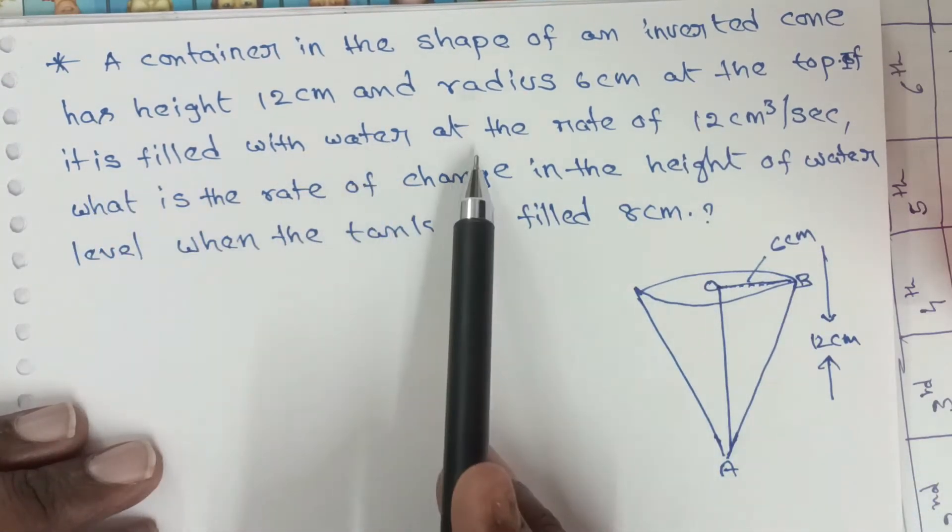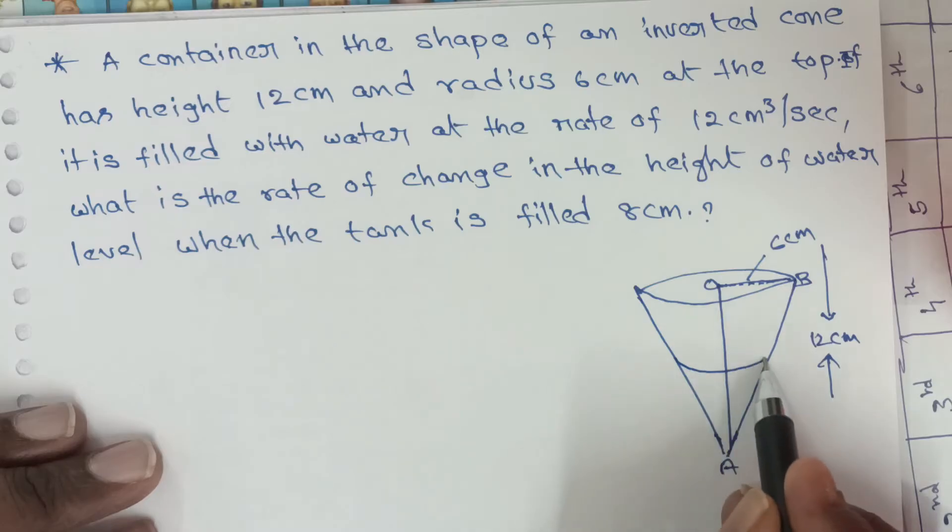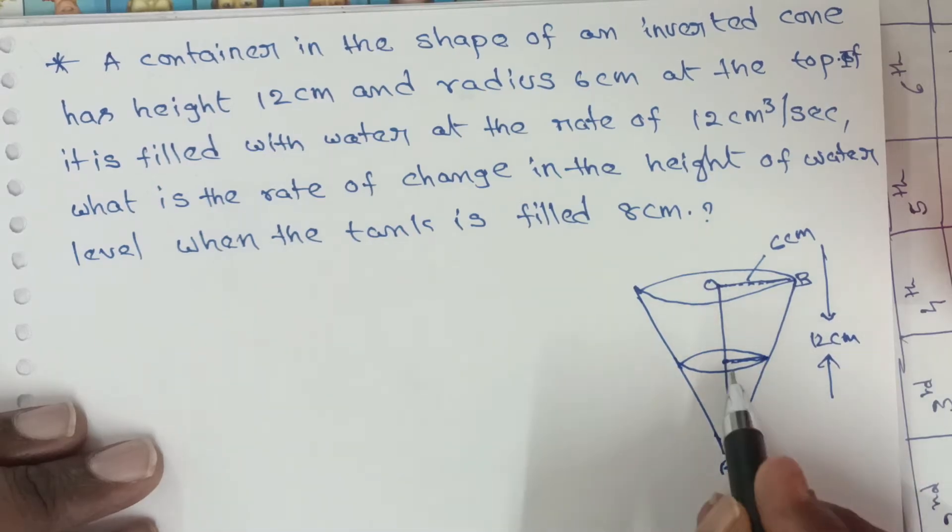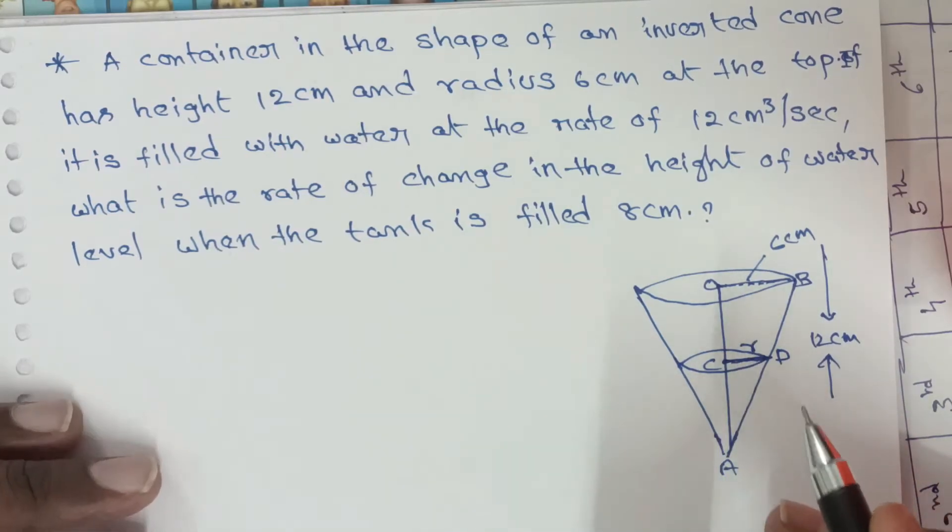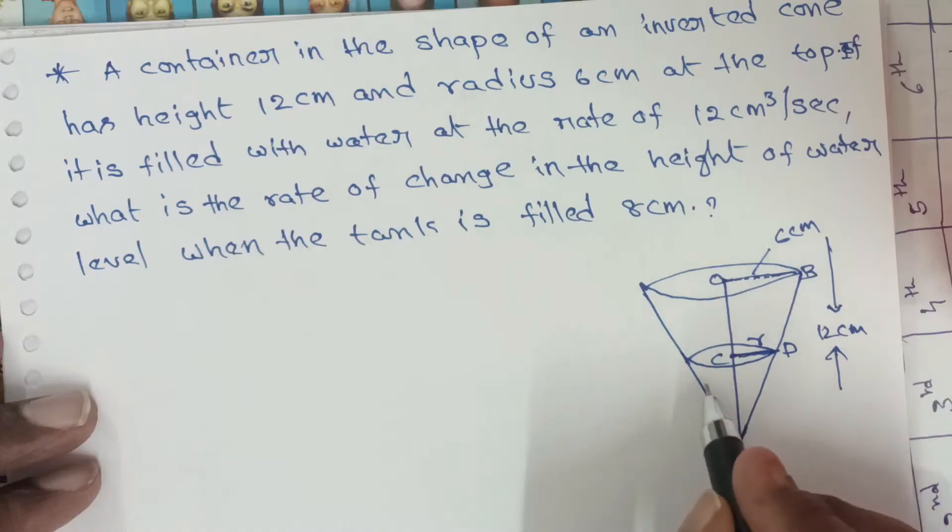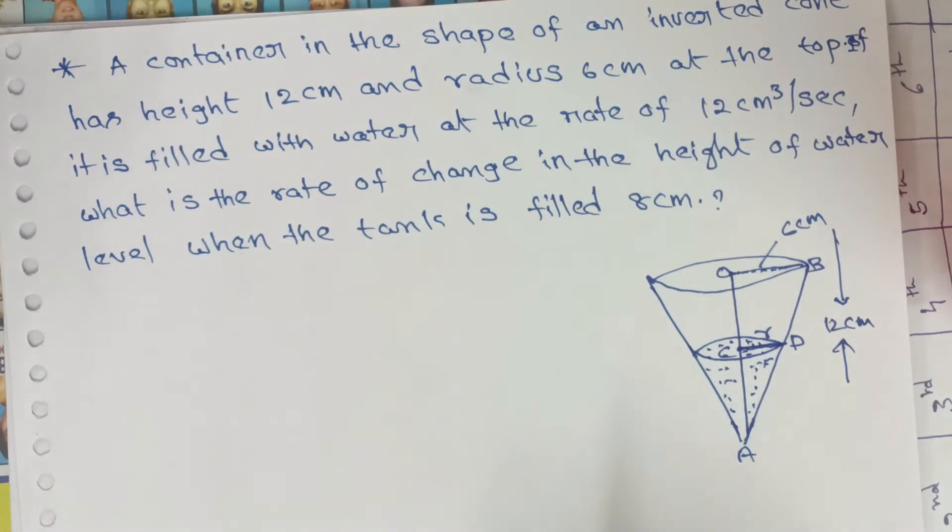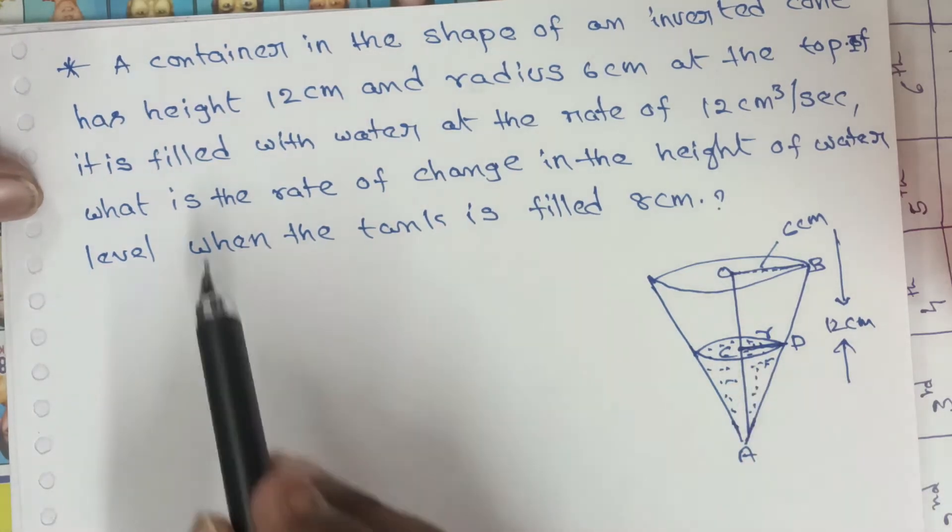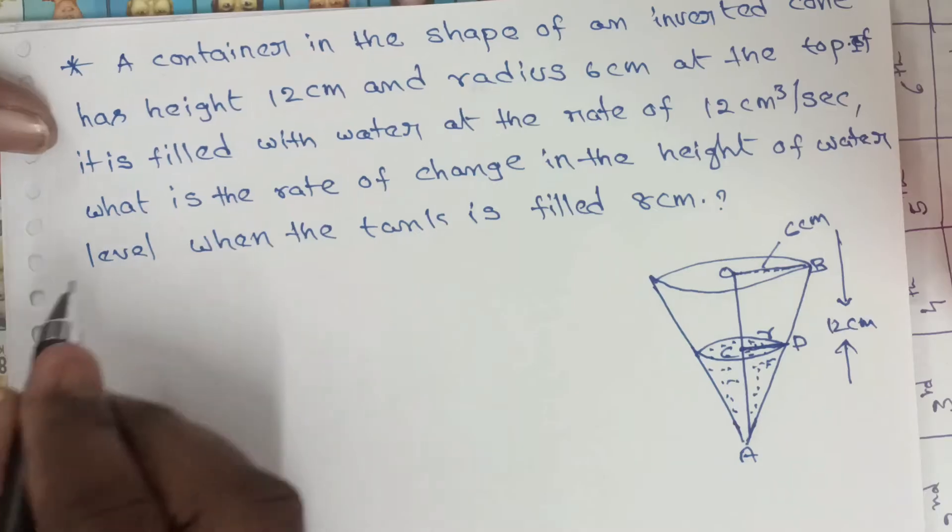It is filled with water at the rate of 12 cm³ per second. Here A, B, C. This radius is r. At this time, the volume is 12 cm³ per second. As water fills, the height is changing. The rate of change in the height of water level - the dh/dt value we need to find.